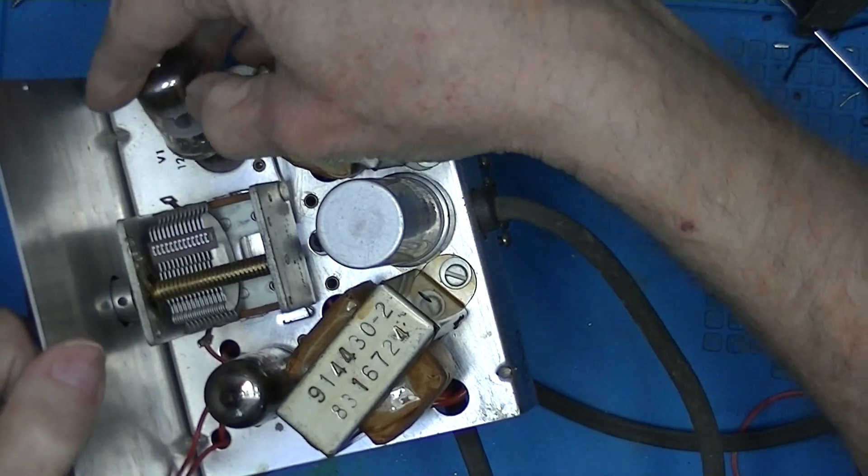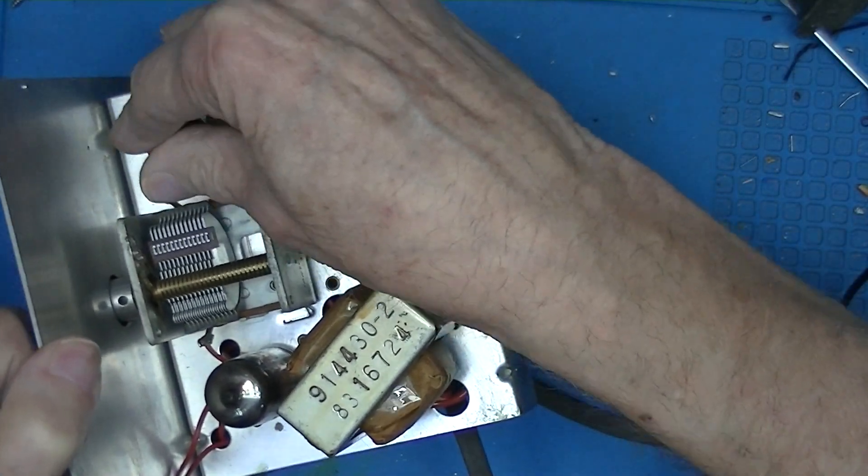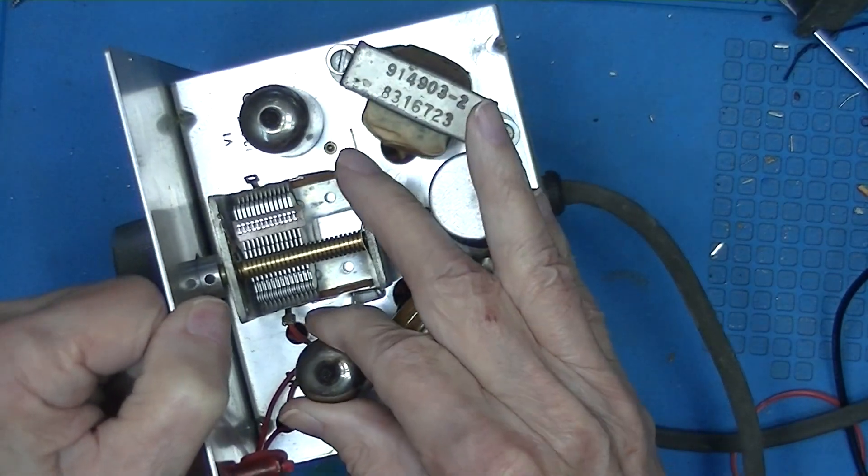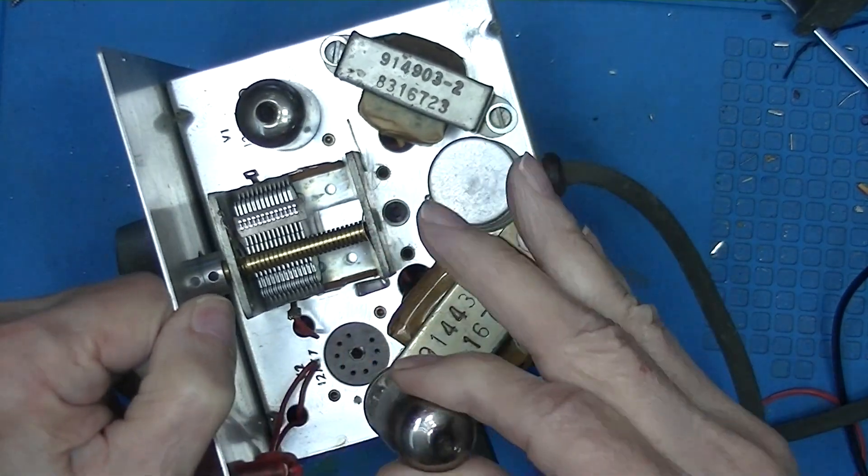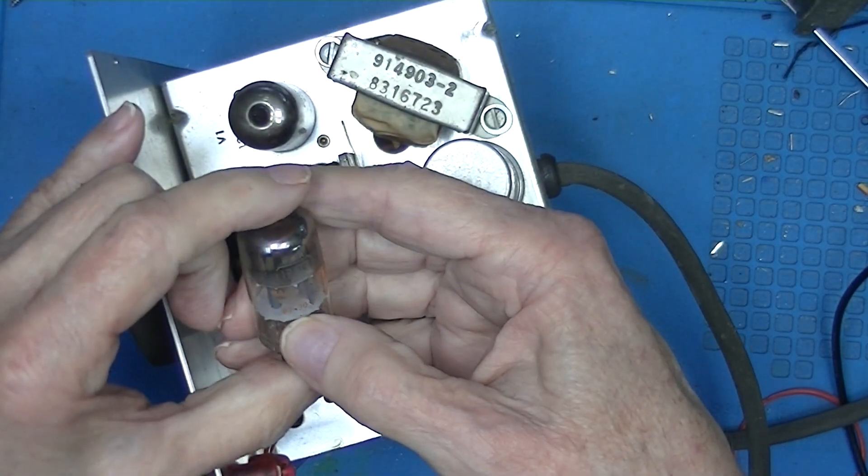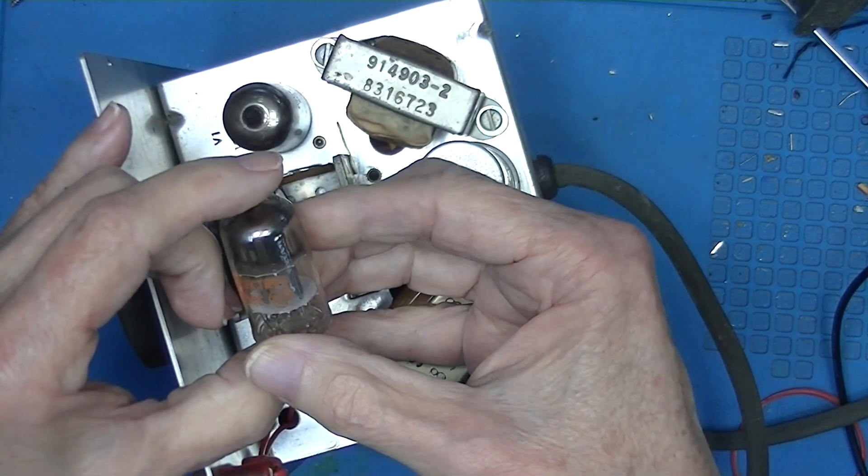Probably the original tubes. Take this one out and it is the same, the same 6730 RCA.